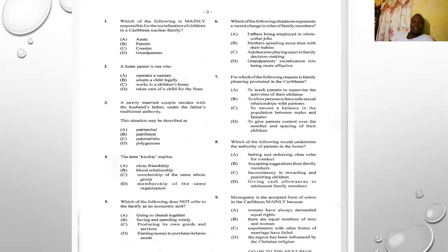Number three: a newly married couple resides with the husband's father under the father's traditional authority. Normally when a married couple reside with the husband's parents it's patrilocal, but the addition of 'under the father's traditional authority' changes things. The options are A) patriarchal, B) patrilineal, C) paternalistic, D) polygamous. Paternalistic and polygamous are out since he has only one wife. 'Patrilineal' refers to lineage, not authority. The answer is A) patriarchal — the man is the authoritative figure.